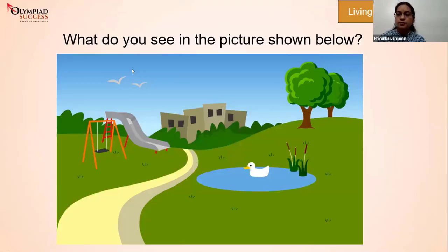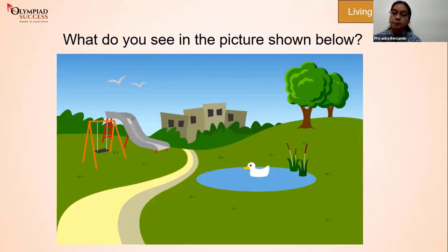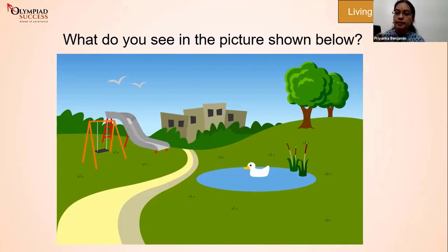That was a short introductory video about living and non-living things. All the things we see around us can be put into two categories: living things and non-living things. All living things move, feel, live for a certain period of time, reproduce, eat food, grow, breathe, and react to different changes. But a non-living thing — like a pencil box or a phone — cannot eat, talk, or move from one place to another on its own. That is the basic difference.